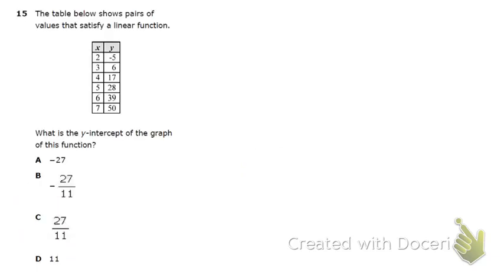Next problem. The table below shows pairs of values that satisfy a linear equation. So they tell us it's linear. What is the y-intercept of the graph of this function? So this is a lot like the problem we did last time, except now it's asking for y-intercept. Earlier it asked for a zero, which is an x-intercept. Here it's asking for a y-intercept.